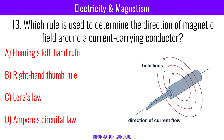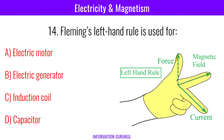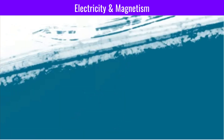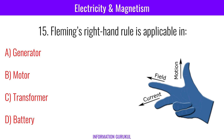Which rule is used to determine the direction of magnetic field around a current carrying conductor? Right hand thumb rule. Fleming's left hand rule is used for the electric motor. Fleming's right hand rule is applicable in a generator.